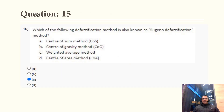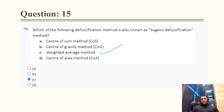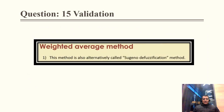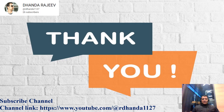Question 15: Which defuzzification method is also known as the Susino defuzzification method? The weighted average method is also known as the Susino defuzzification method. This is confirmed by the cross-validation snapshot.